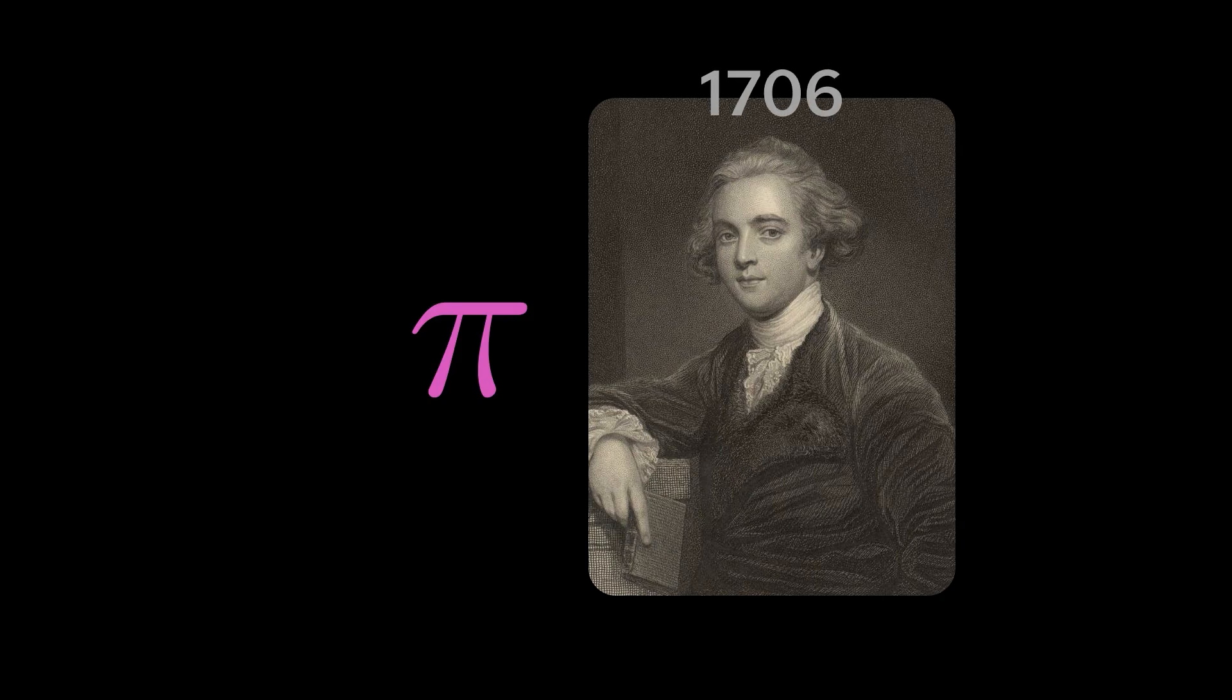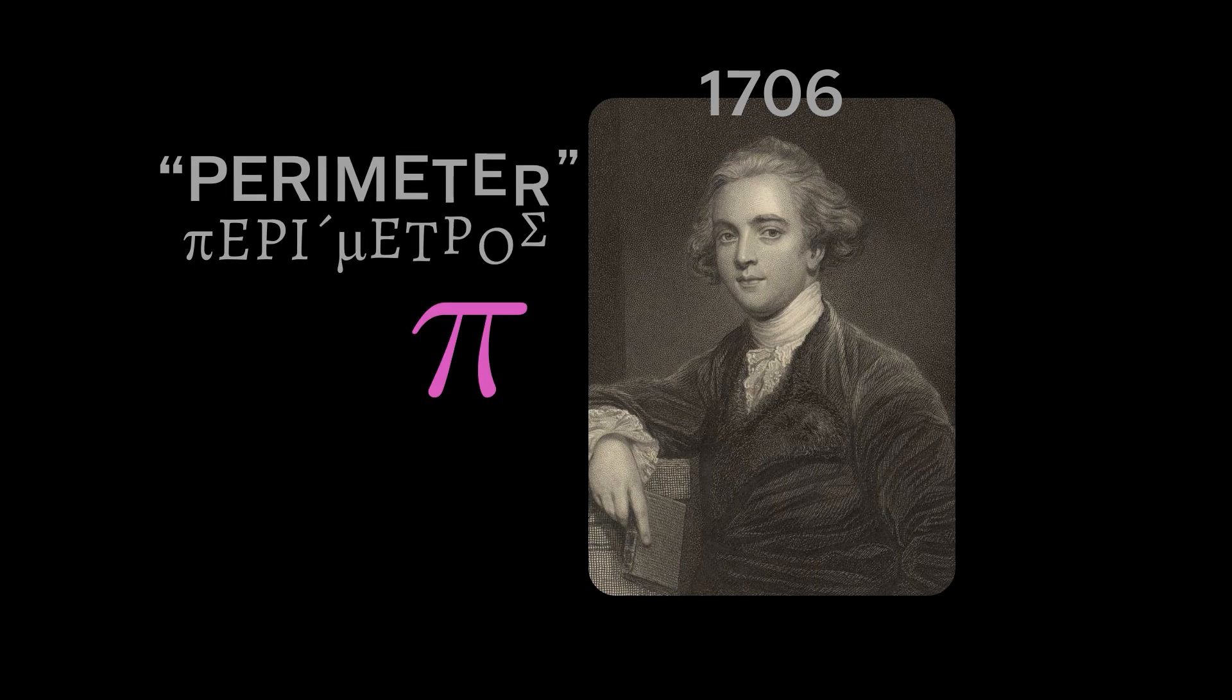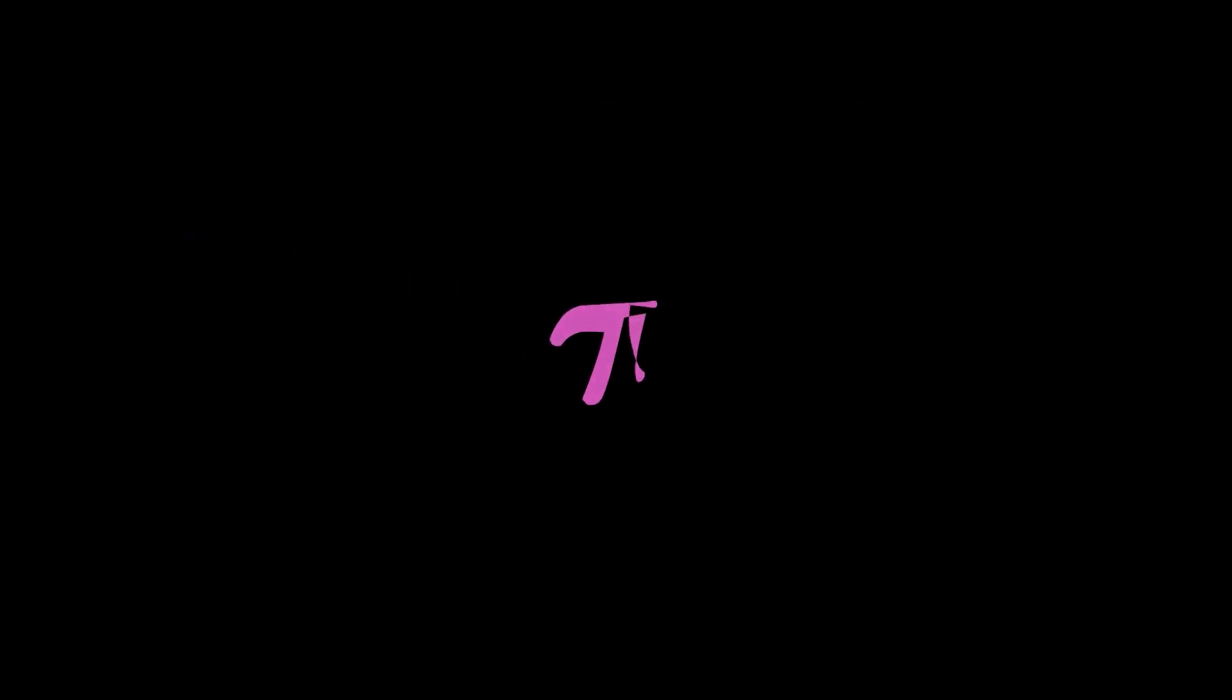Jones chose this letter as it is the first of the Greek word perimeter, also known as circumference. He did this since Pi relates to circles.